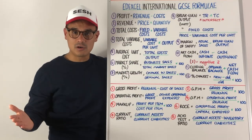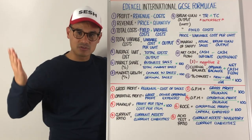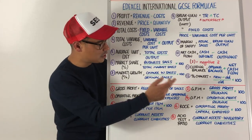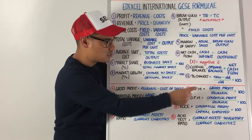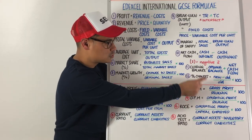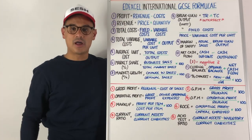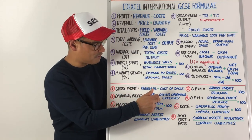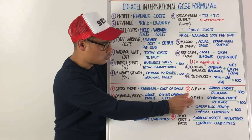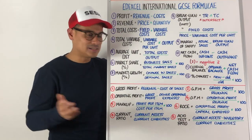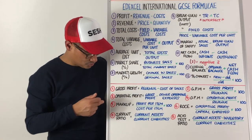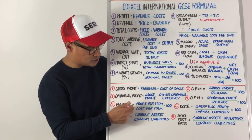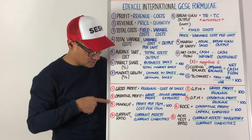The following formulas are ones you'll be given on the sheet, but it's good to still learn them so you can be quick with them — at minimum you need to be able to apply them. Number one is gross profit: revenue minus cost of sales. Number two, gross profit margin: gross profit divided by revenue times by 100. Number three, operating profit: gross profit minus other operating expenses. Number four, operating profit margin: operating profit divided by revenue times by 100. Number five is markup: profit per item divided by cost per item times by 100.